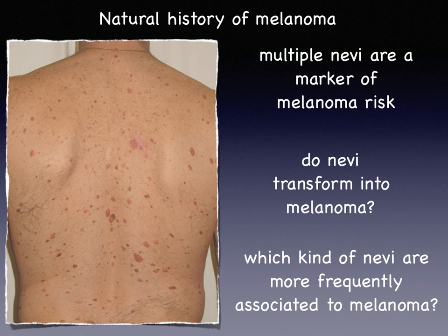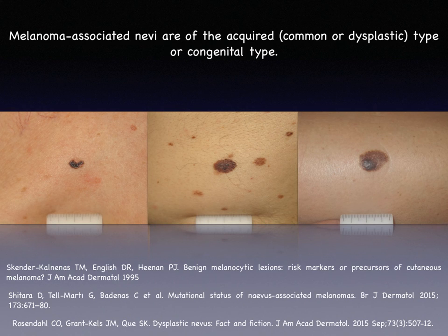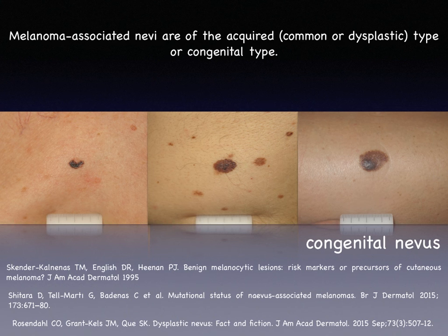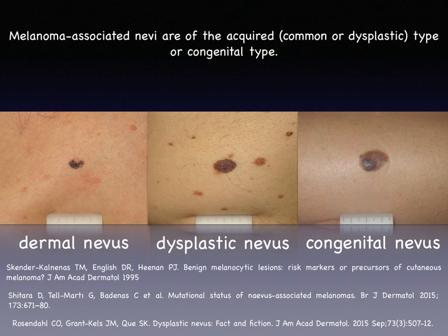What we can do is to observe and describe what we observe. In real life, we observe that melanomas associated to nevi arise in association to congenital nevi, of course, but also to nevi of the acquired type — common or dysplastic. So 20 to 30 percent of melanomas arise in association to nevi, and these nevi can be common dysplastic acquired nevi or congenital nevi.